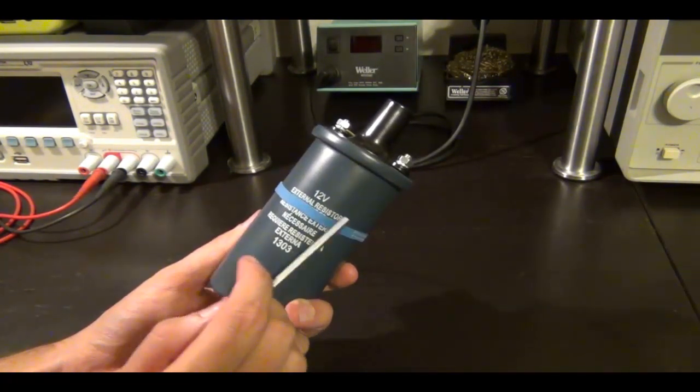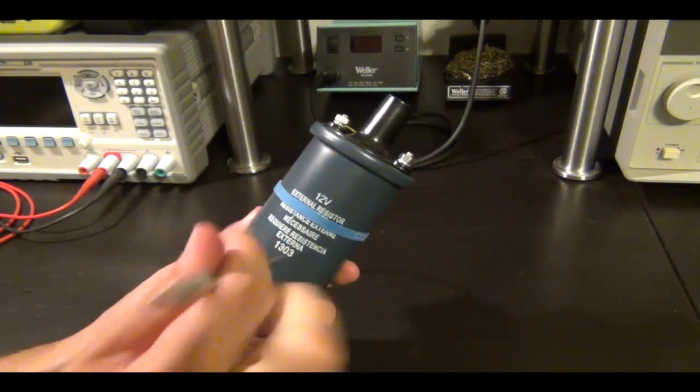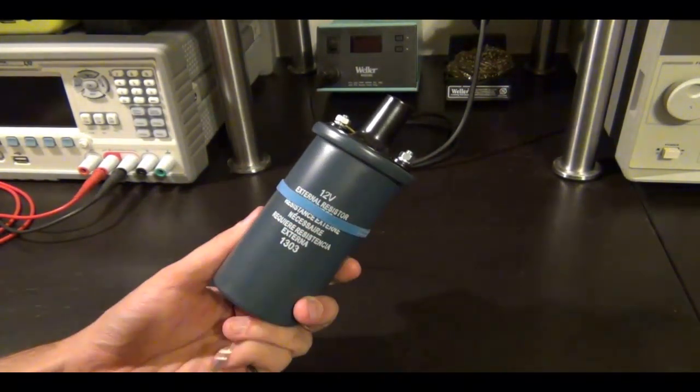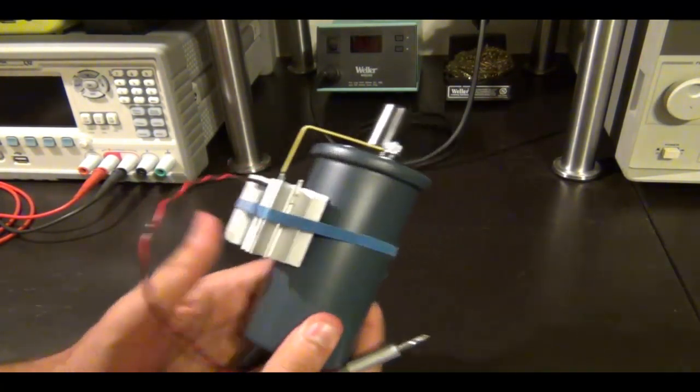This one is 12 volts and it says external resistor required because the coil resistance is so small that if you put 12 volts across this, you may burn it up because a car battery can generate so much current.